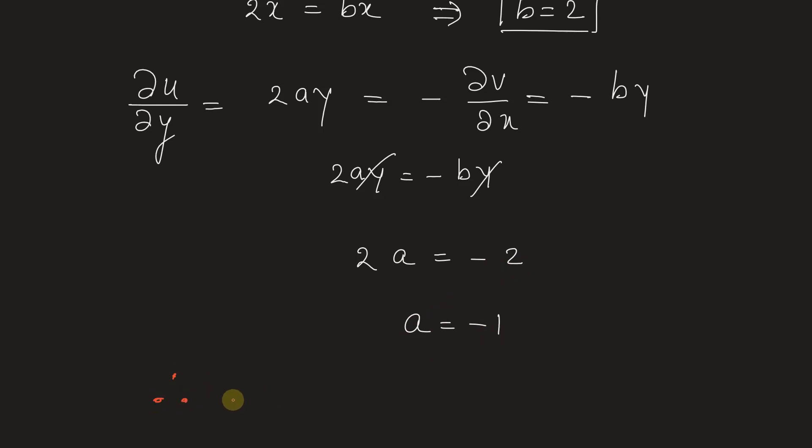From the CR condition we get the value of a is minus 1 and b is 2.